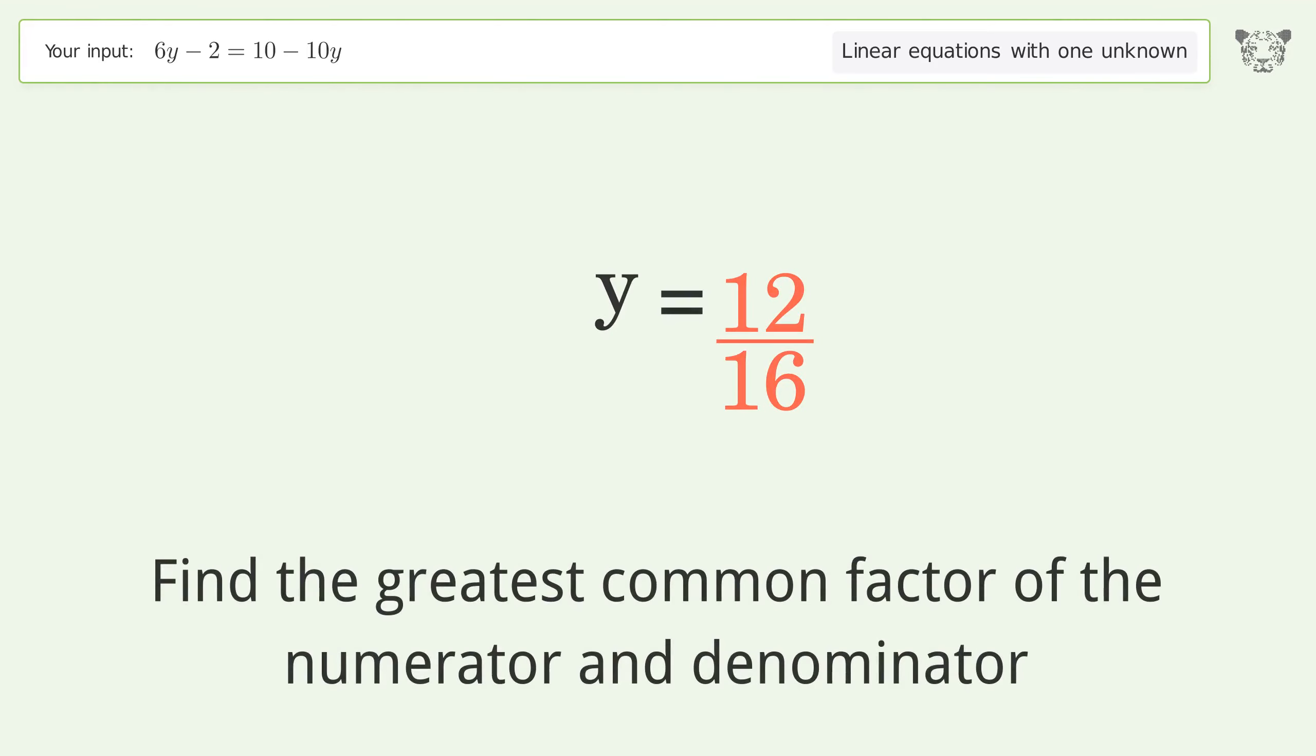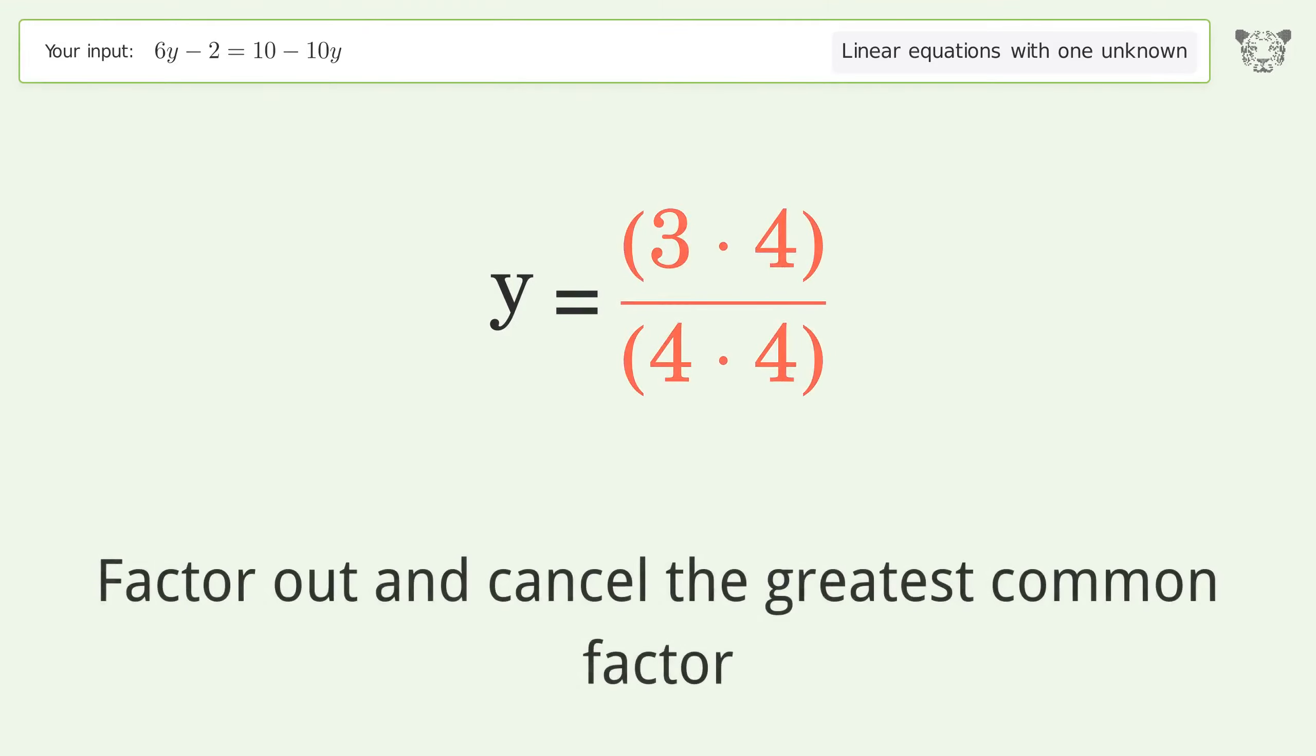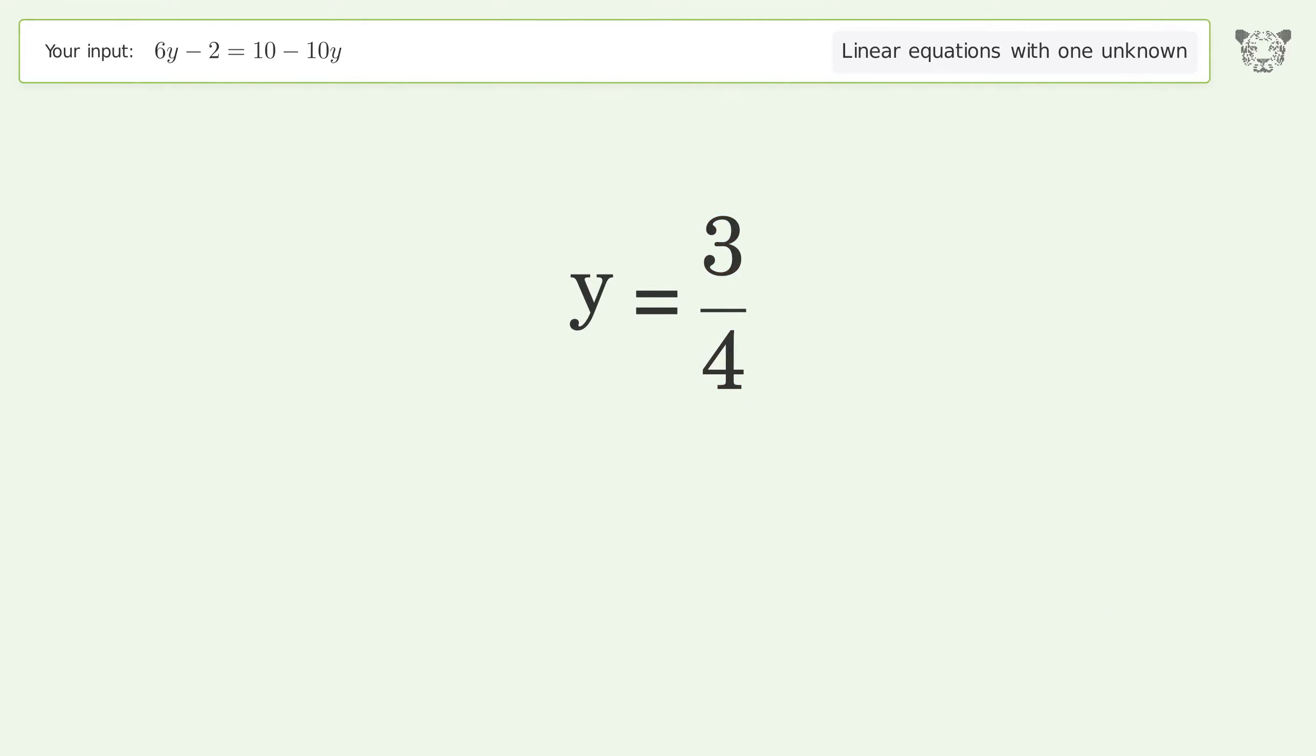Find the greatest common factor of the numerator and denominator. Factor out and cancel the greatest common factor. And so the final result is y equals 3 over 4.